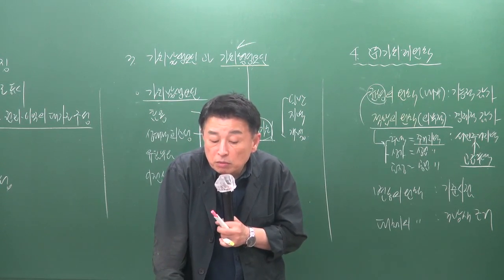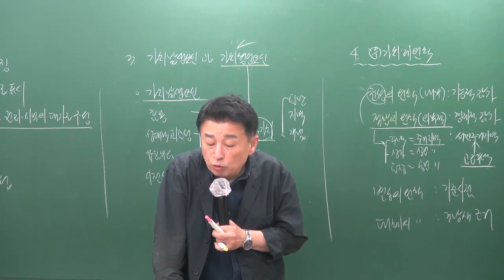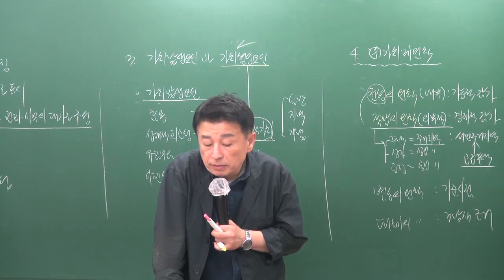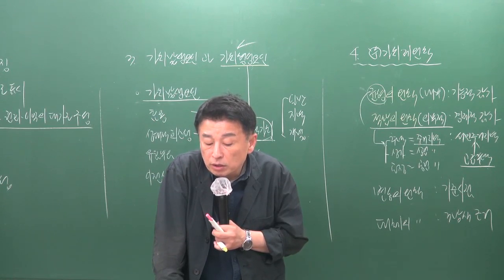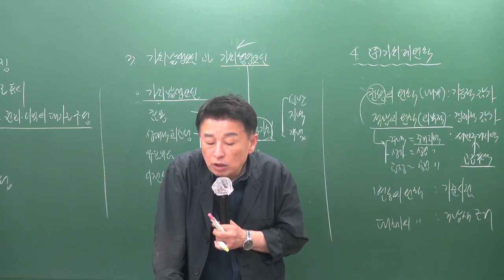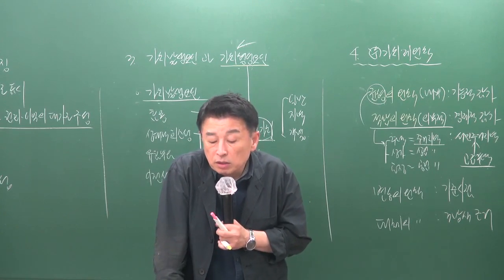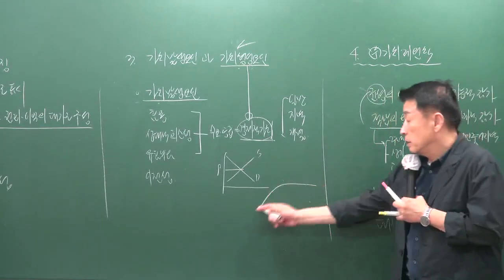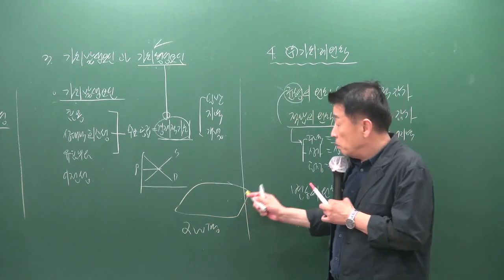10번 문제 1번 보기에서 부동산이 주변 토지 용도와 어울릴 때 높은 가치를 창출한다는 것은 균형의 원칙이 아니라 적합의 원칙입니다. 3번 보기에서 부동산이 최대 가치를 구현하기 위해 투입되는 생산 요소의 결합 비율이 적절한 균형을 이루어야 한다는 원리는 균형의 원칙으로, 이때 적용되는 것은 경제적 감가가 아닌 기능적 감가입니다.